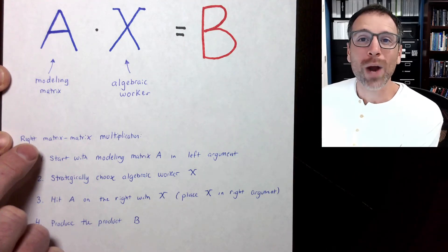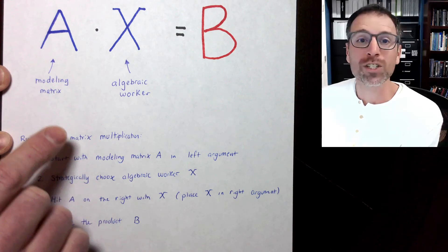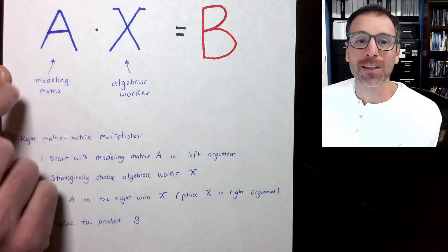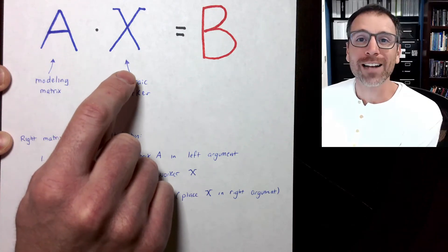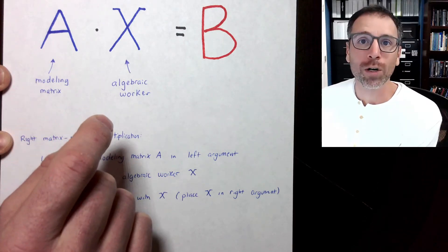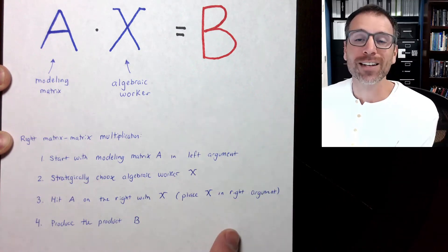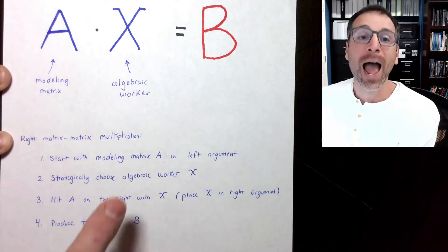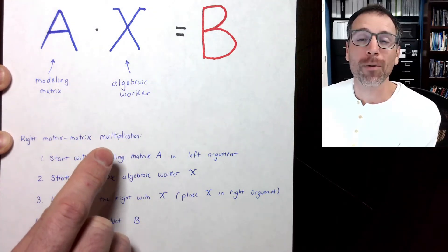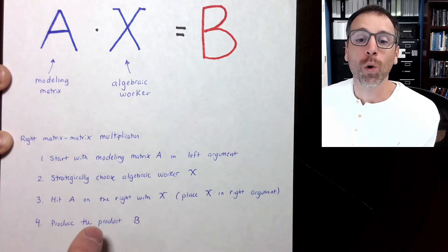In other words, we use right matrix-matrix multiplication in the following context. First, we start with a modeling matrix A in the left argument. Then we strategically choose an algebraic worker X to do specific mathematical work. Then we hit A on the right-hand side with X — we place X into the right argument of our product — then perform matrix-matrix multiplication to produce the output, also known as the product, matrix B.